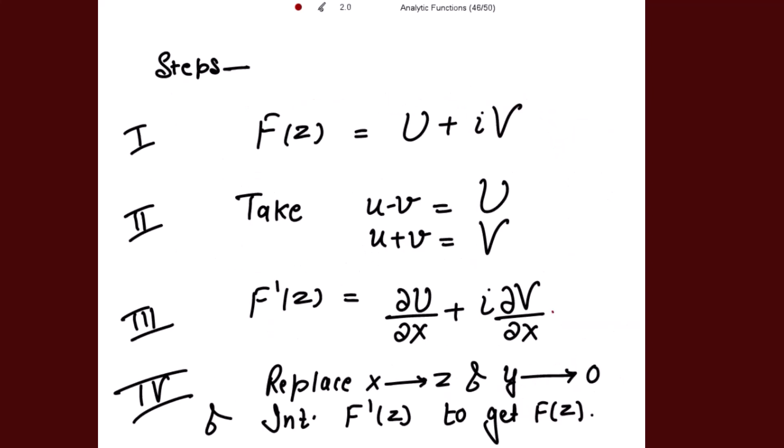The steps are: first define capital F(z) to be equal to U plus iota V, then take u minus v as capital U and u plus v as capital V, and then find F'(z) which equals partial U over partial x plus iota partial V over partial x. Keep in mind that capital U equals u minus v is only given to us, so we can only find partial U over partial x. But how can we find partial V over partial x? Because the value of u plus v is not with us.